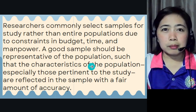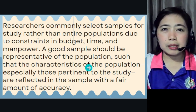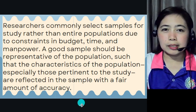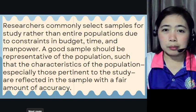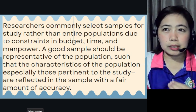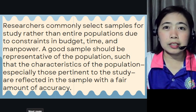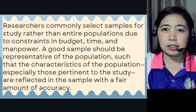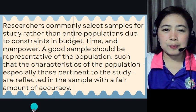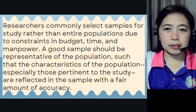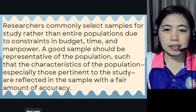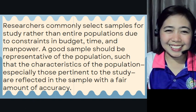The information gathered must still be accurate. This will be written in your methodology in Chapter 3. So under methodology, you will discuss your sampling.